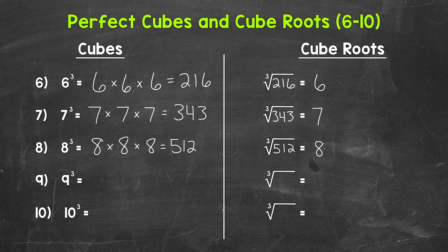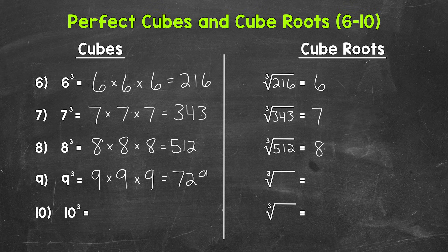Let's move on to number nine where we have nine cubed. That means nine times nine times nine. Nine times nine is eighty-one, and eighty-one times nine equals seven hundred twenty-nine. Nine cubed equals seven hundred twenty-nine, which means the cube root of seven hundred twenty-nine equals nine.